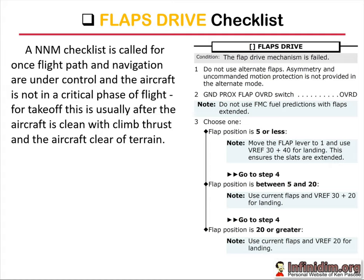The after takeoff checklist should be held until any outstanding non-normal checklists are complete. However, technically with the flaps drive malfunction you have the option of actually retracting the slats prior to running the flaps drive checklist, which would seem to be in keeping with the non-normal paradigm used after takeoff. While in practice this does work, there is a good argument for delaying both the non-normal checklist and the slat retraction until a safe height is reached, then running the non-normal flaps drive checklist before deciding whether you're actually going to retract the slats.